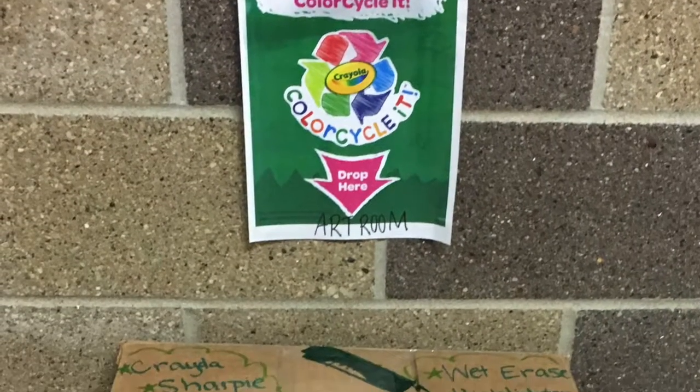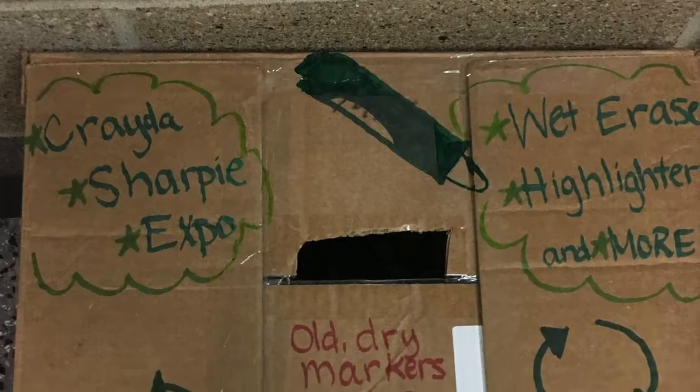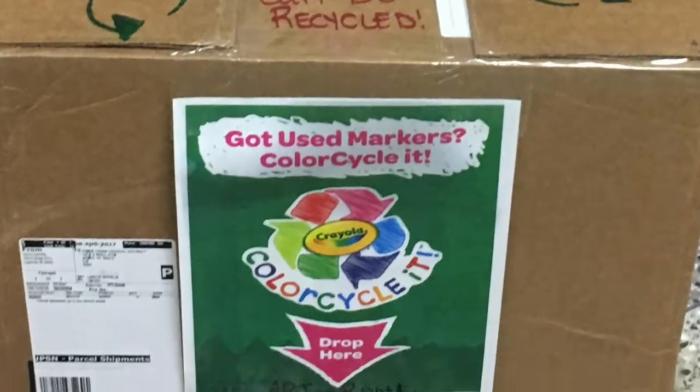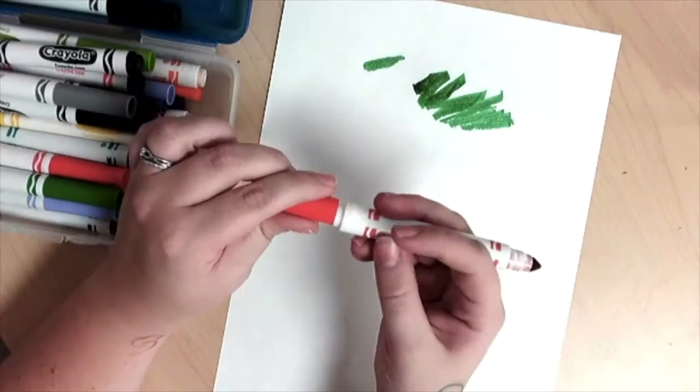When you find a marker that might be dry, we are going to recycle them. Crayola has created a program called Color Cycle, which recycles all kinds of old, dried out markers and turns them into fuel and other recycled things. Take that to the outside of the art room when you find a dried one.